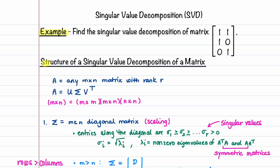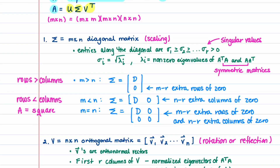Let's start by going over the structure of a singular value decomposition of a matrix, so you'll be able to understand how to find the decomposition of the matrix we'll be working with, as well as any other matrix you may encounter. We'll let matrix A be the matrix we want to decompose, and it can be any m by n matrix with a rank of r.